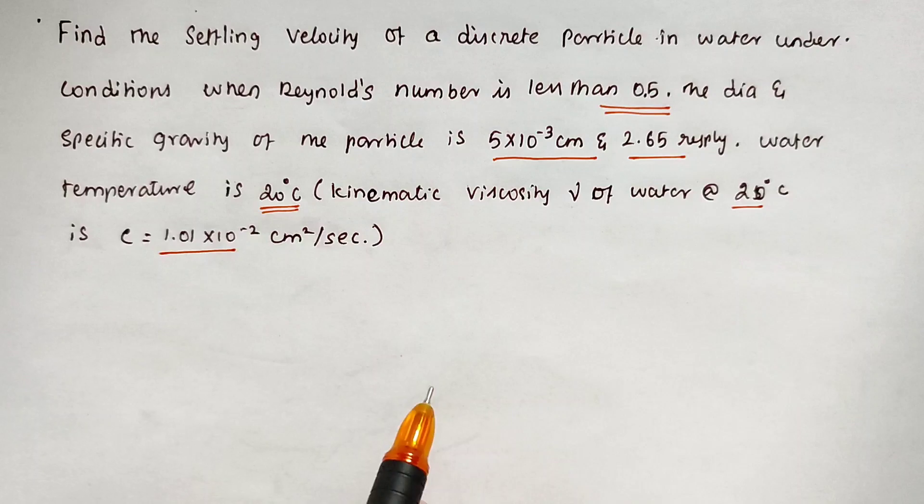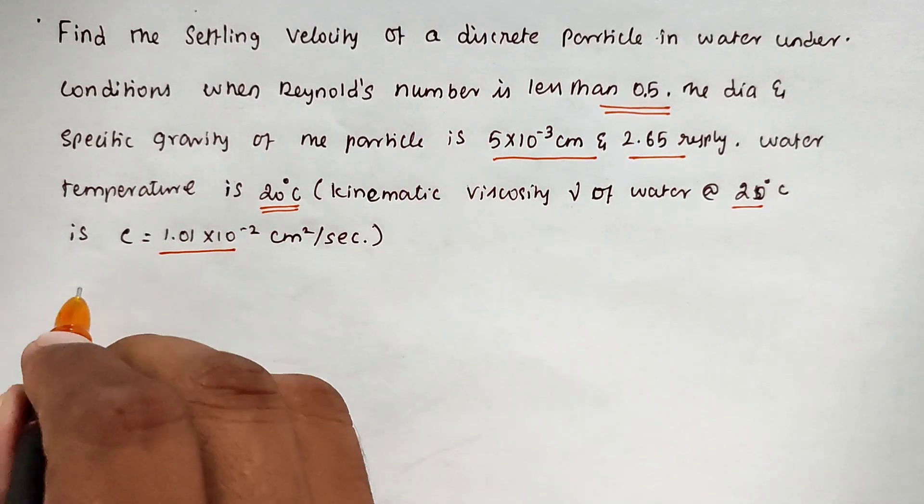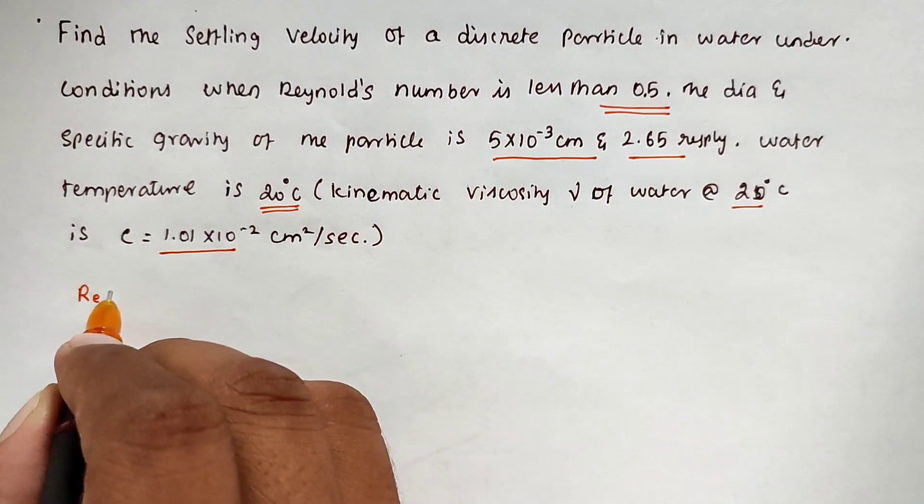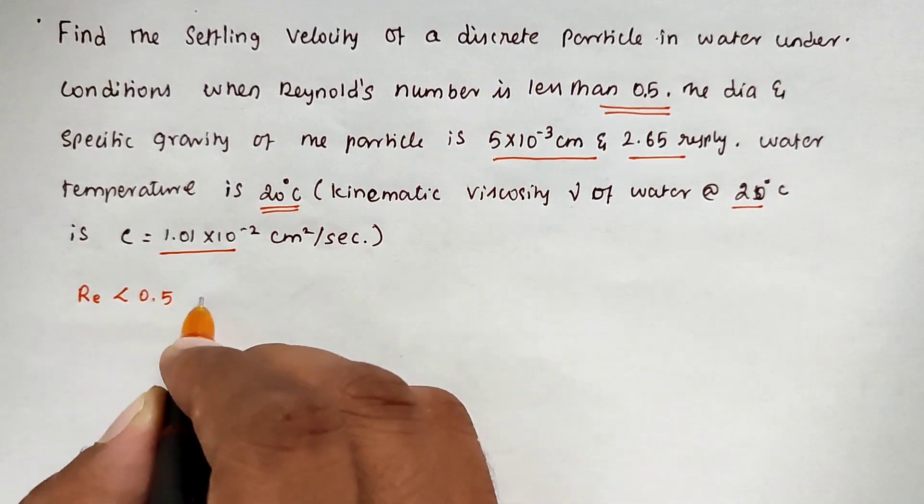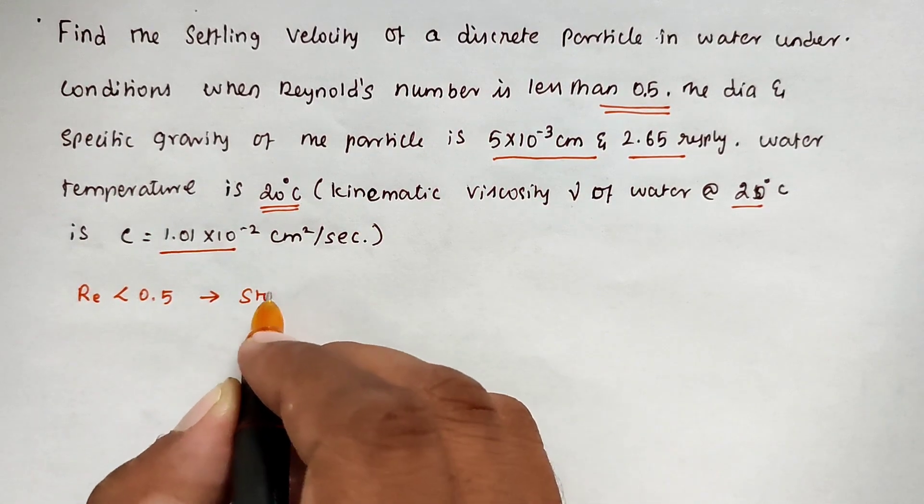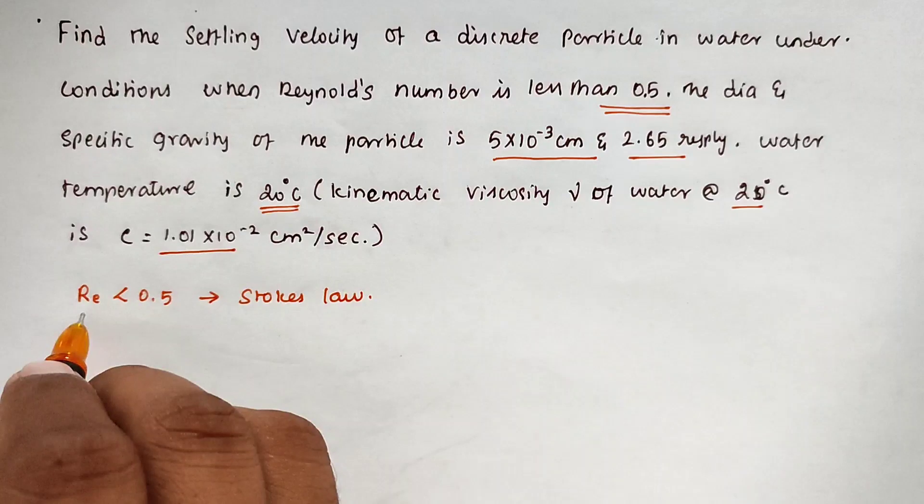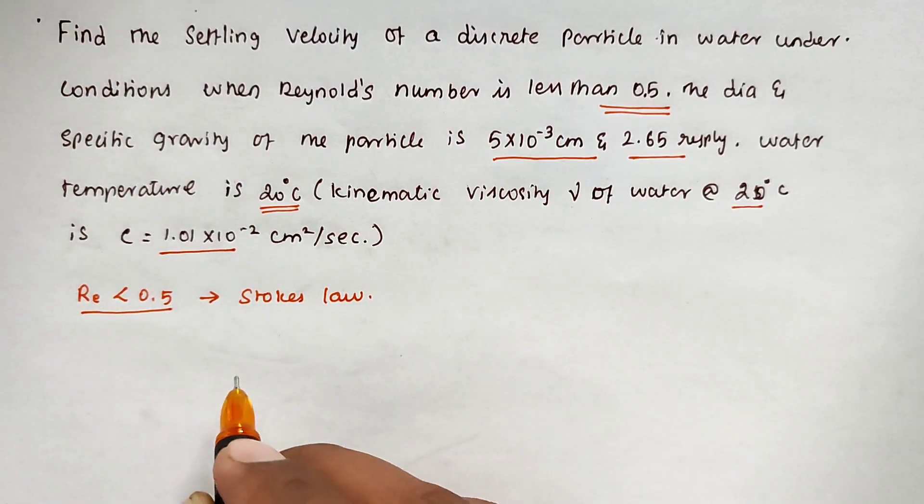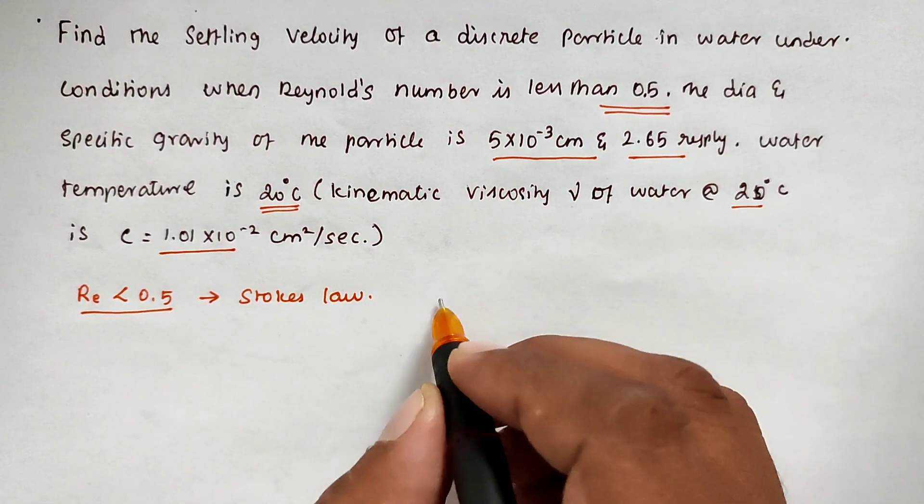When Reynolds number is less than 0.5, we can use Stokes law. Whenever Reynolds number is less than 0.5, Stokes law is valid, so we can apply it to find the settling velocity.